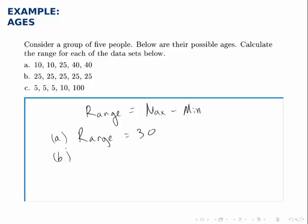For the second one, the numbers go from 25 to 25, there's no difference between them, so the difference between the highest and the lowest is 0.